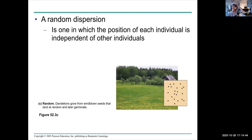Sometimes organisms are just dispersed randomly. The position of individuals are independent of other individuals, like windblown seeds for example. They land randomly in different places in the field and that's where they germinate. That's just a random dispersion.